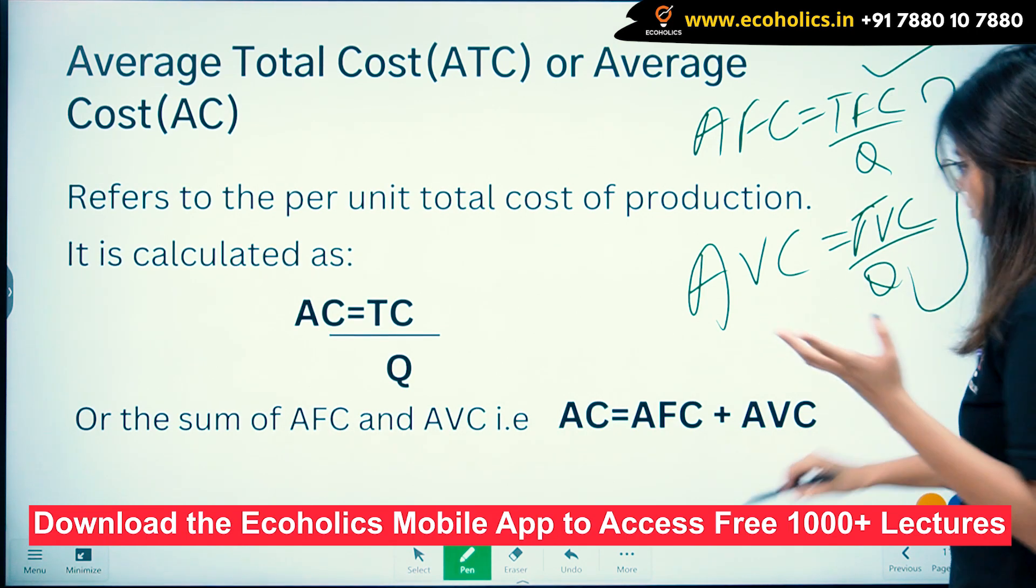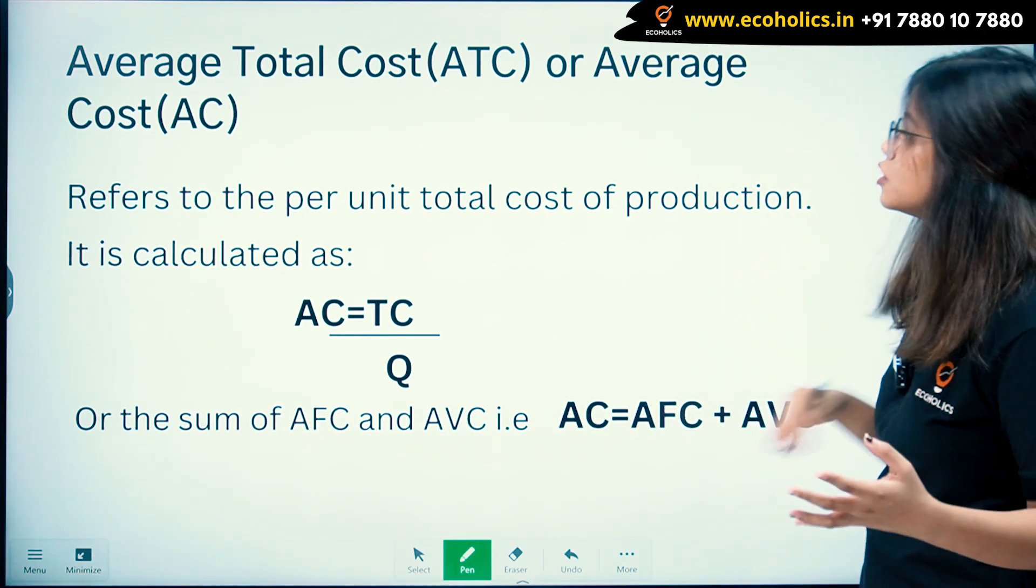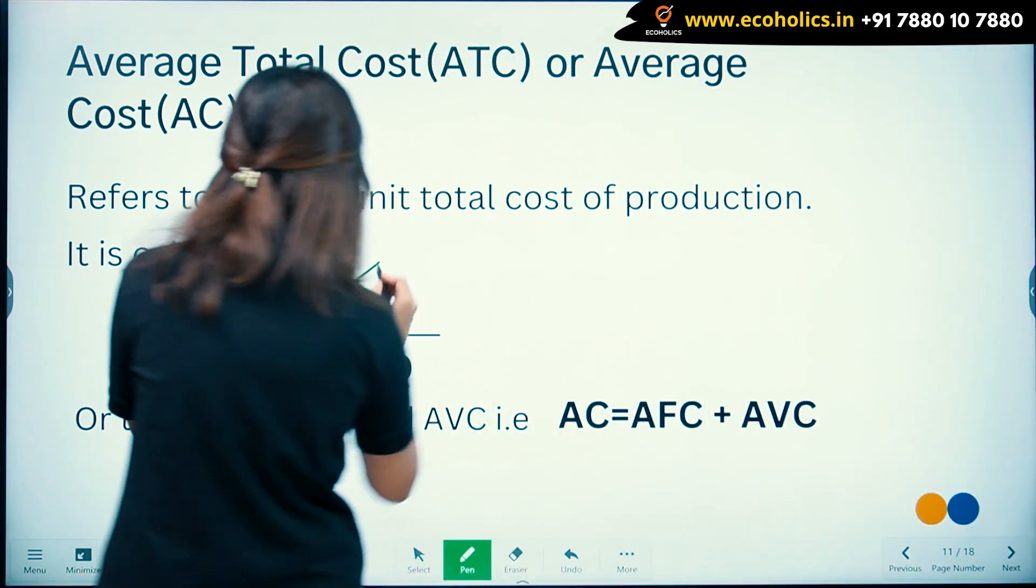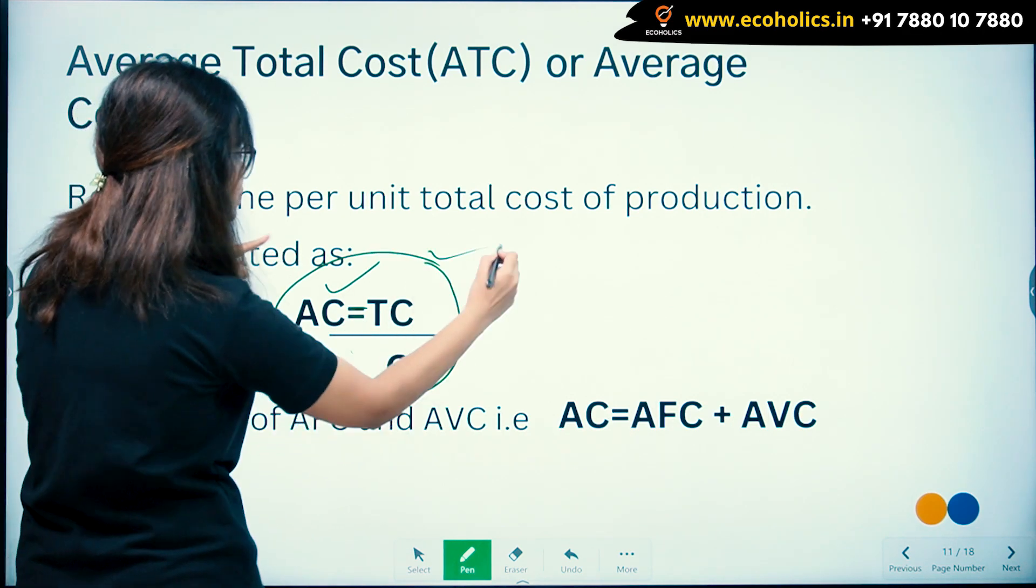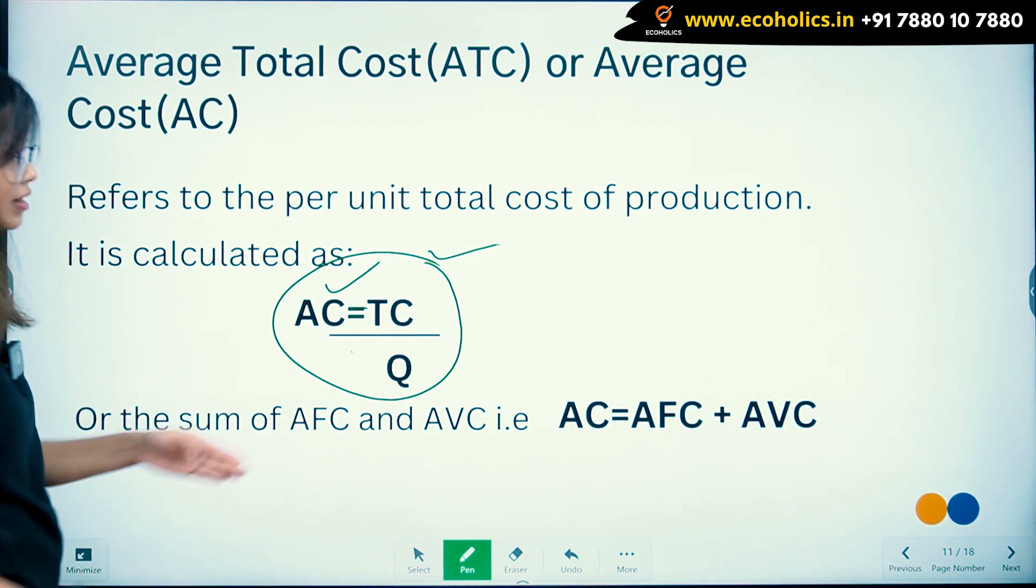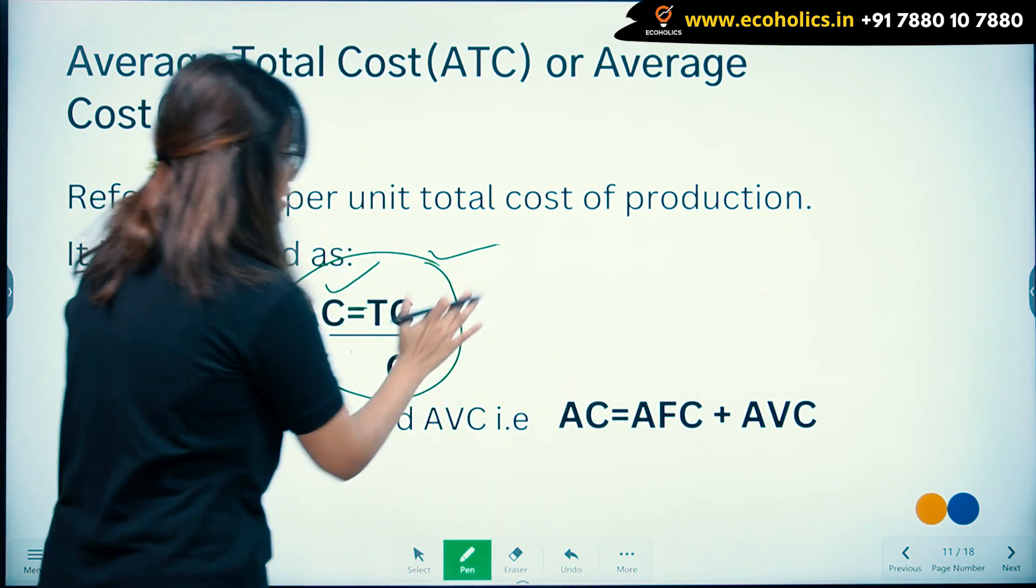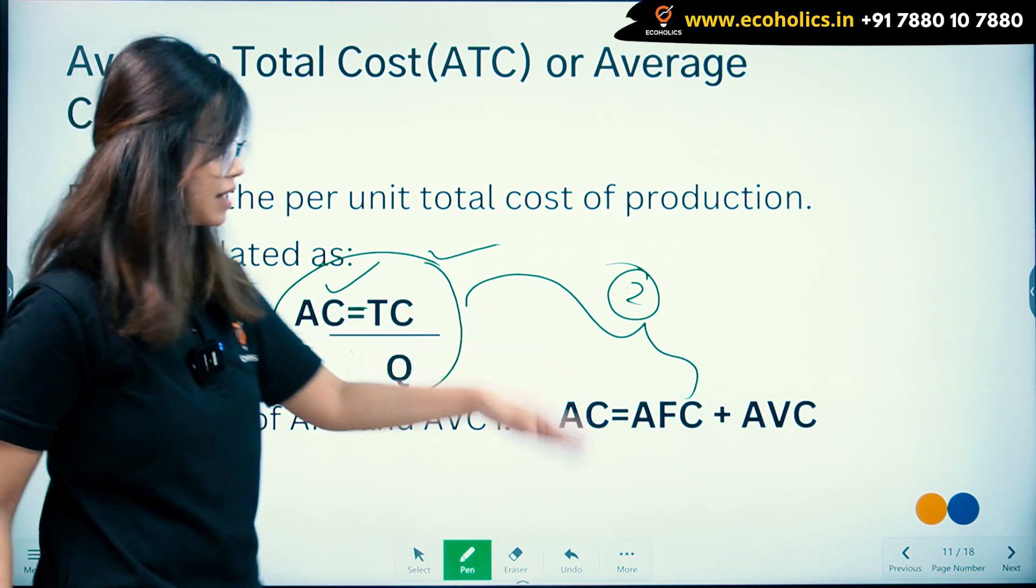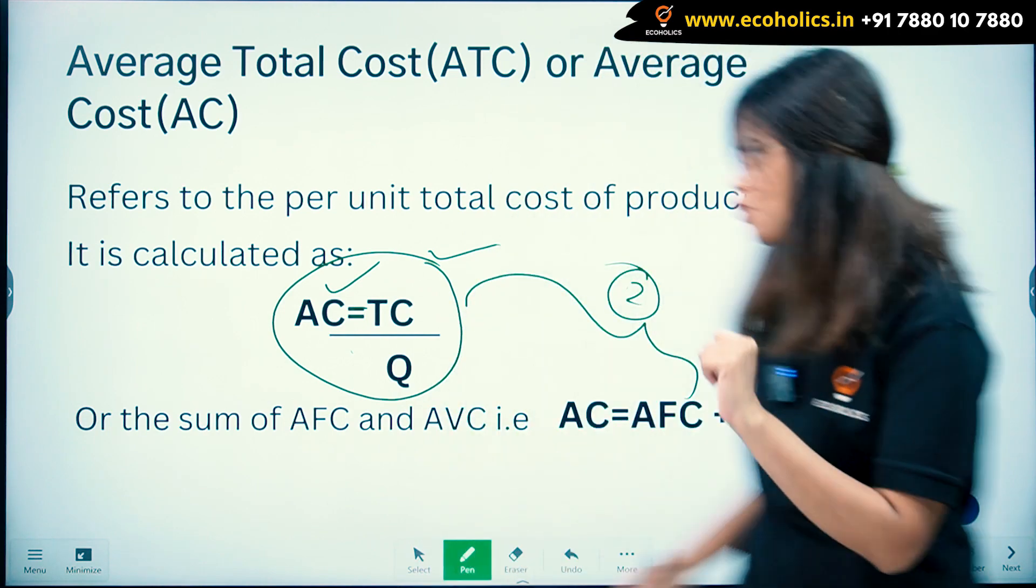Now let's understand what is AC. It refers to per unit total cost of production. It is calculated as AC equals TC divided by Q, or the sum of AFC and AVC: AC equals AFC plus AVC. These are the two formulas - TC by Q or AFC plus AVC. This is very simple for you all to understand.